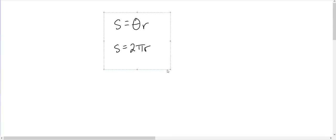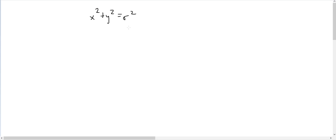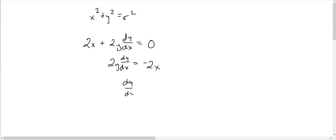For the calculus-based proof, we know that the equation for any arbitrary circle is x² + y² = r² for radius r. From here we use implicit differentiation: 2x + 2y(dy/dx) = 0, since r² is a constant. Solving for dy/dx gives us dy/dx = −x/y, which is the slope of the circle at any point.